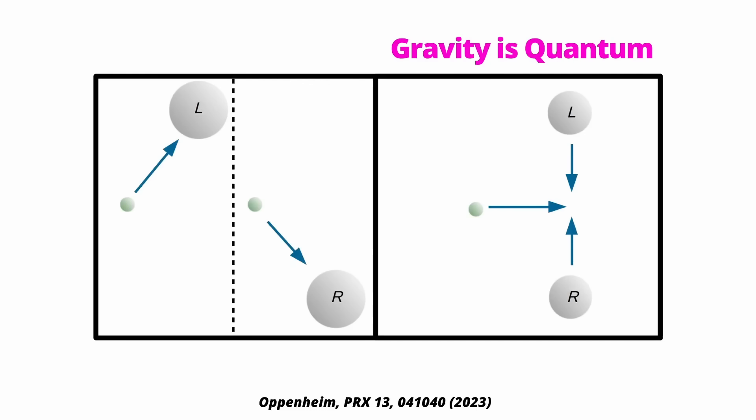If the gravitational field is not quantum, then it goes either left or right, but not both, so it must fluctuate between the two. So, more uncertainty.